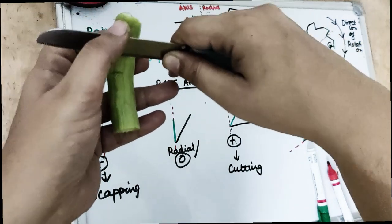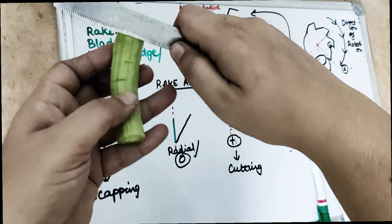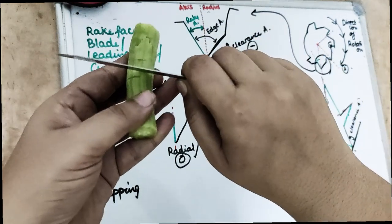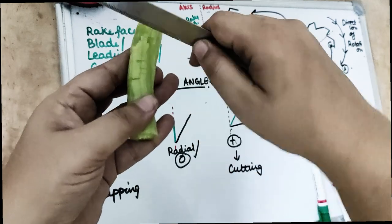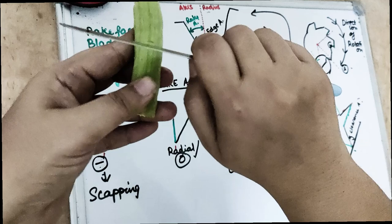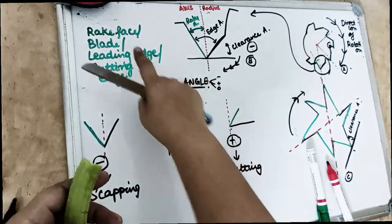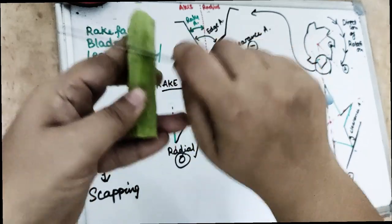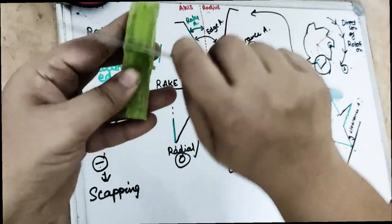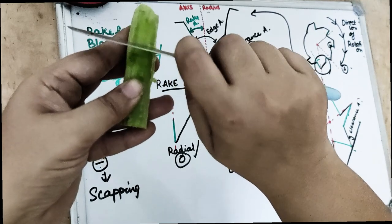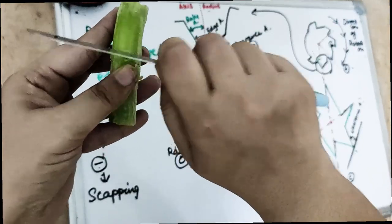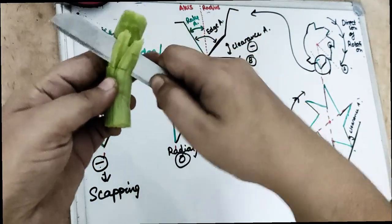So when the radius is ahead, that means it is doing the cutting action — this is the positive rake angle. For the negative rake angle, if the long axis is given and the surface touching first is our rake face — when the rake face is touching first — it is doing the scraping action. So the negative rake angle does the scraping action, while a positive rake angle does the cutting action.